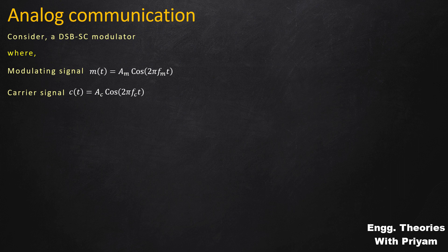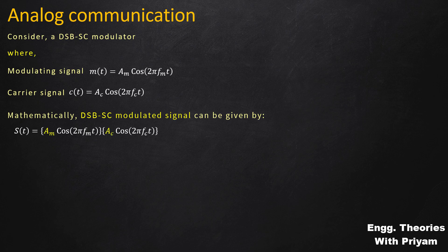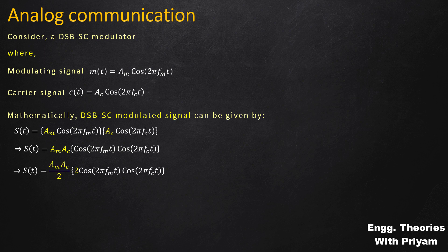This modulating signal and the carrier signal are given as input to the modulator, which generates the DSBSC modulated signal as output. Mathematically, the DSBSC modulated signal is s(t) = Am·cos(2π·fm·t) · Ac·cos(2π·fc·t), which can be written as s(t) = Am·Ac·cos(2π·fm·t)·cos(2π·fc·t). Dividing and multiplying by 2, s(t) = (Am·Ac/2)·[2·cos(2π·fm·t)·cos(2π·fc·t)].